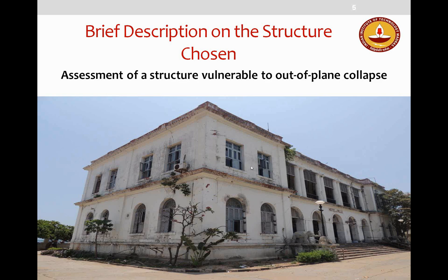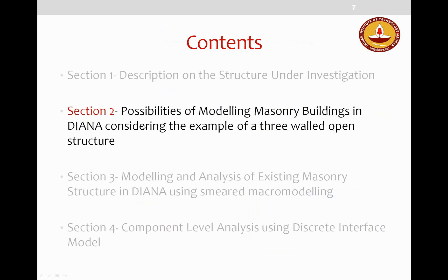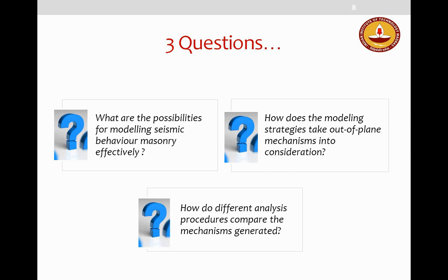These are the plan, section, and elevation details of the structure. Tie beams are provided in this direction to prevent out-of-plane deformation. Moving into section two, which covers the possibilities of modeling masonry buildings in Diana, considering the example of a three-walled open structure.